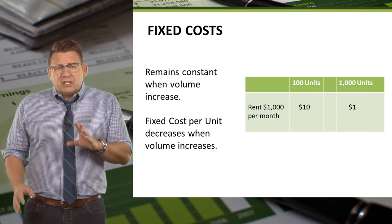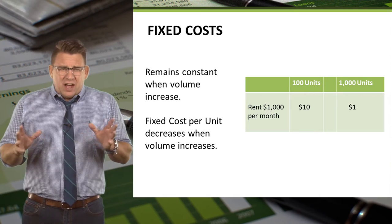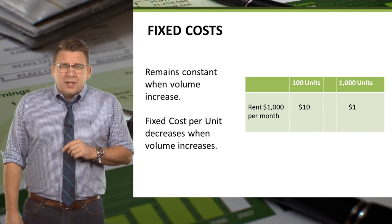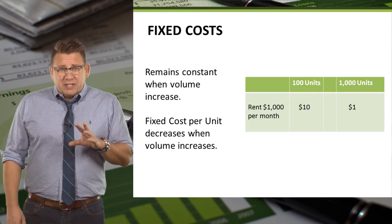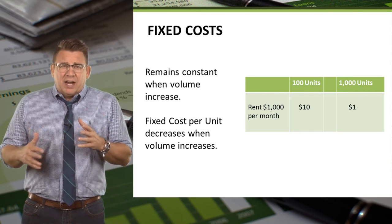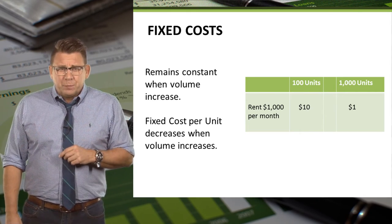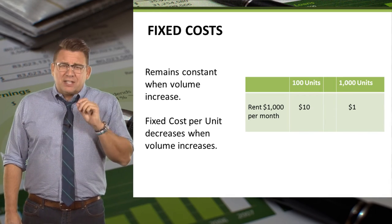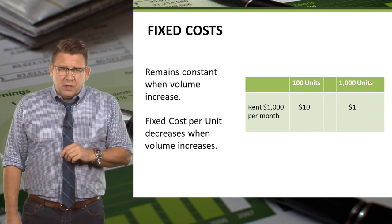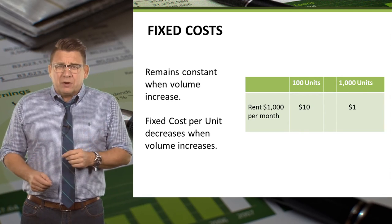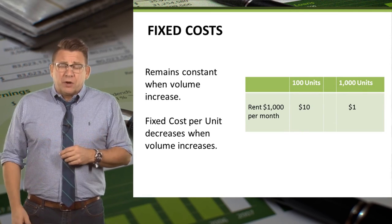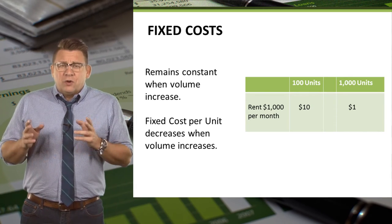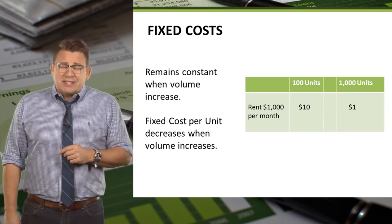For example, McDonald's may rent a building, and let's say the cost to do that is $1,000 per month. This is the fixed cost because it's $1,000 and it doesn't depend on how many hamburgers they sell. But the rent cost per burger decreases as volume increases. If they sell 100 hamburgers, the rent cost per burger is $10. If they sell 1,000 hamburgers, the rent cost per unit is now $1.